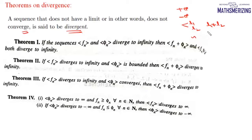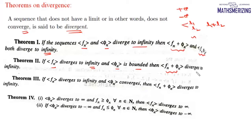There are some theorems on divergence. The first theorem: if sequences fₙ and φₙ both diverge to infinity, then both fₙ + φₙ and fₙ · φₙ diverge to infinity as well. The second theorem: if fₙ diverges to infinity and φₙ is bounded, then fₙ + φₙ also diverges to infinity. The third theorem: if fₙ diverges to infinity and φₙ is a convergent sequence, then fₙ + φₙ also diverges to infinity.